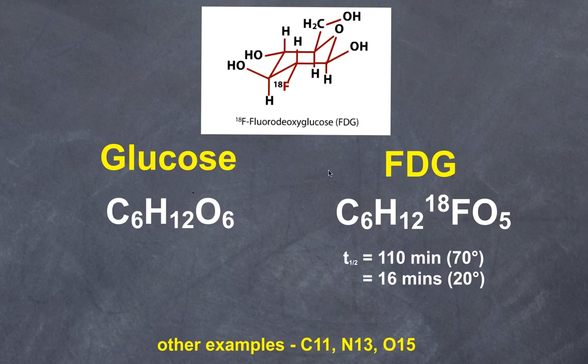FDG stands for fluorodeoxyglucose, and in essence it is a glucose analog. If you look carefully at this model of the glucose molecule, it is actually glucose with the only exception being that an oxygen atom is removed and replaced with a radioactive isotope of fluorine, fluorine-18.